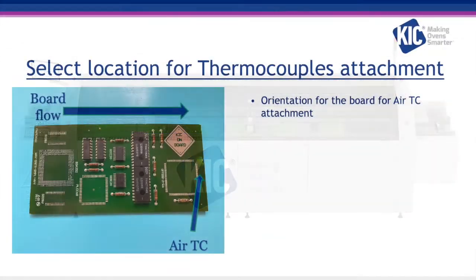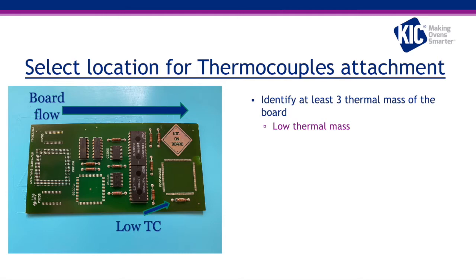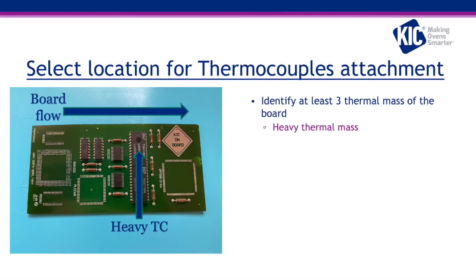Find out the orientation of the board to determine which end is the leading edge. You should be able to look at the board being used in production and see which direction it is going in. This will identify the location for the air TC. If that information is not available, you must consult with engineering. The most basic selection criteria would be to identify at least three locations: low, medium, and heavy mass areas of the board.